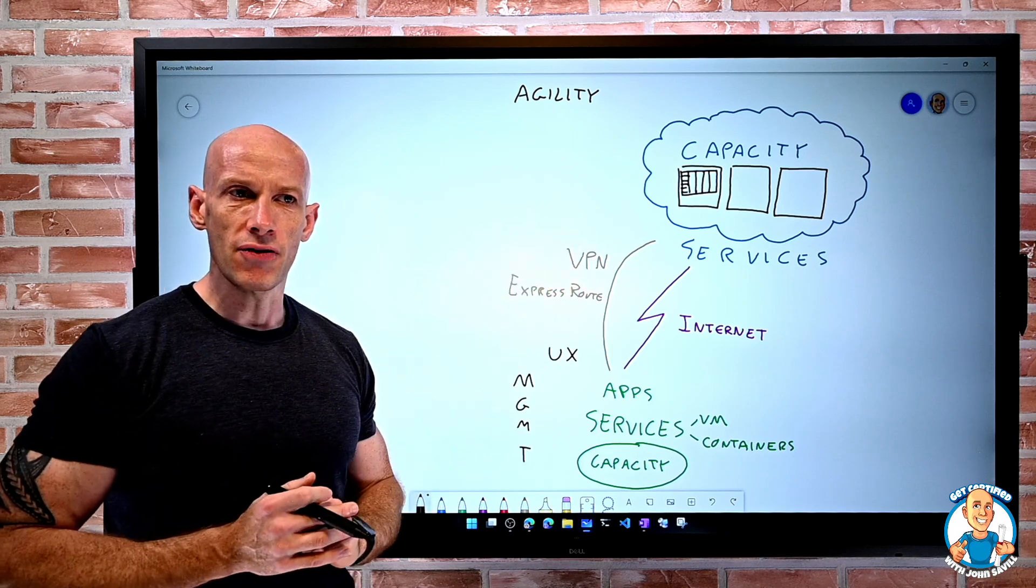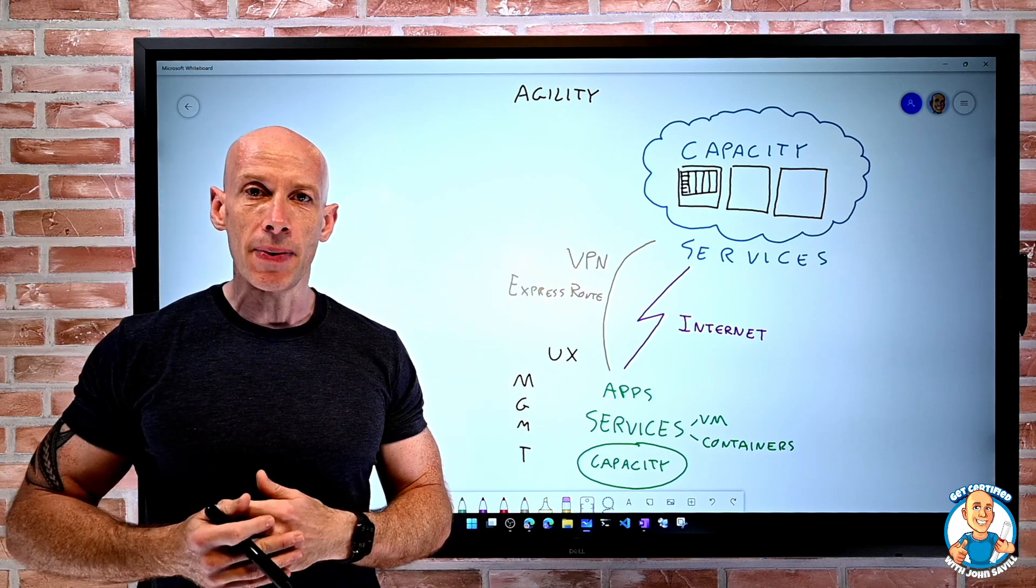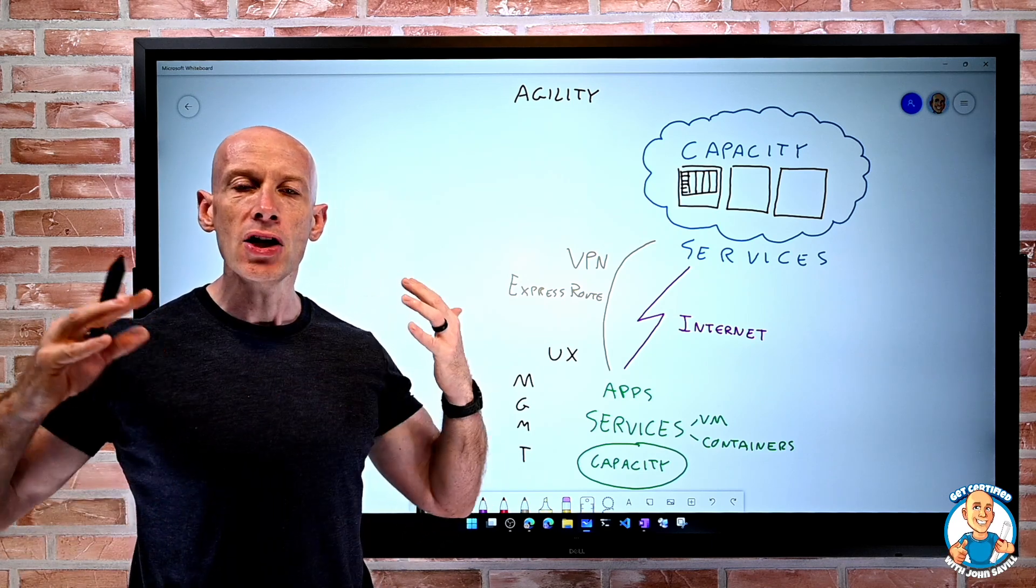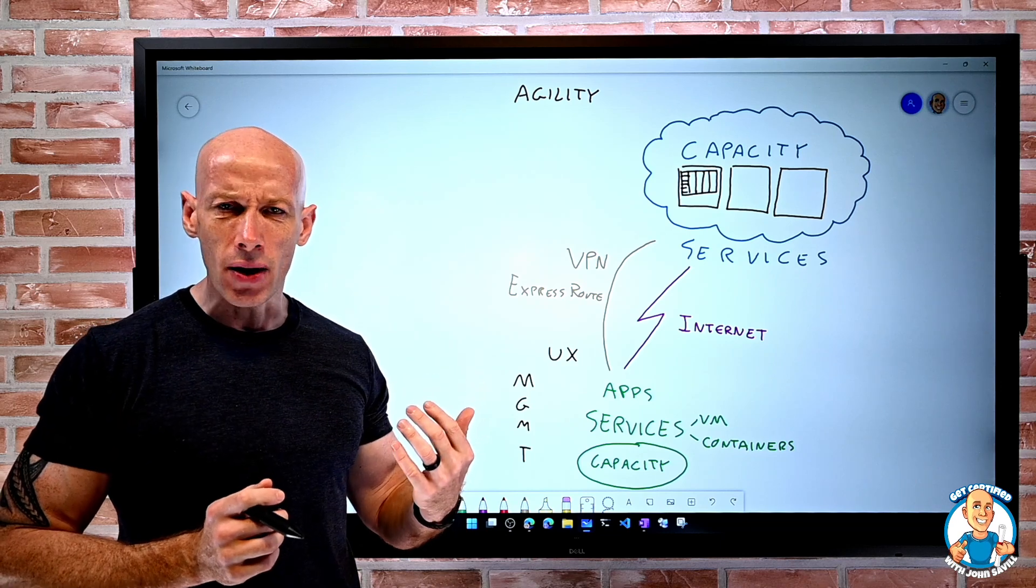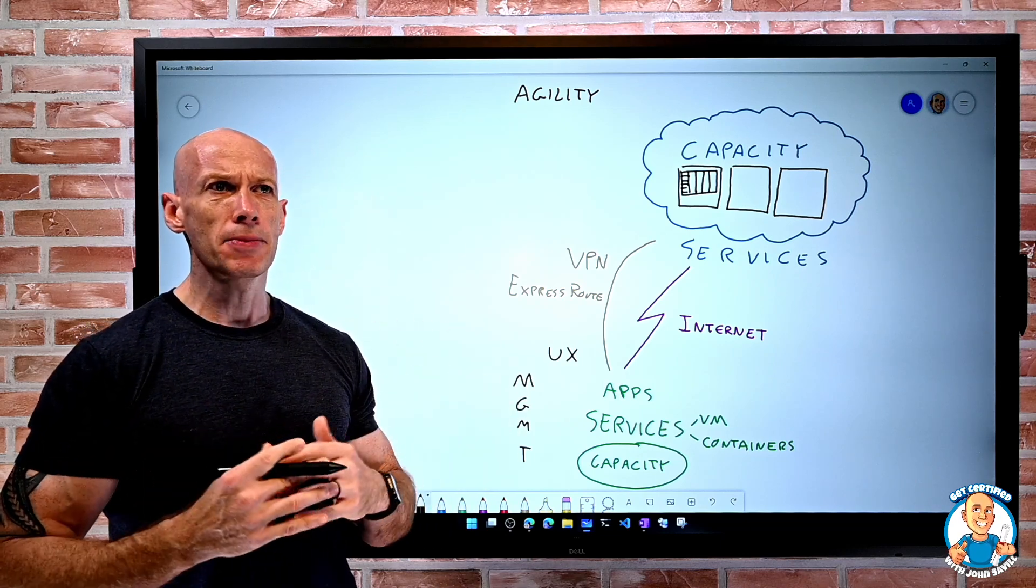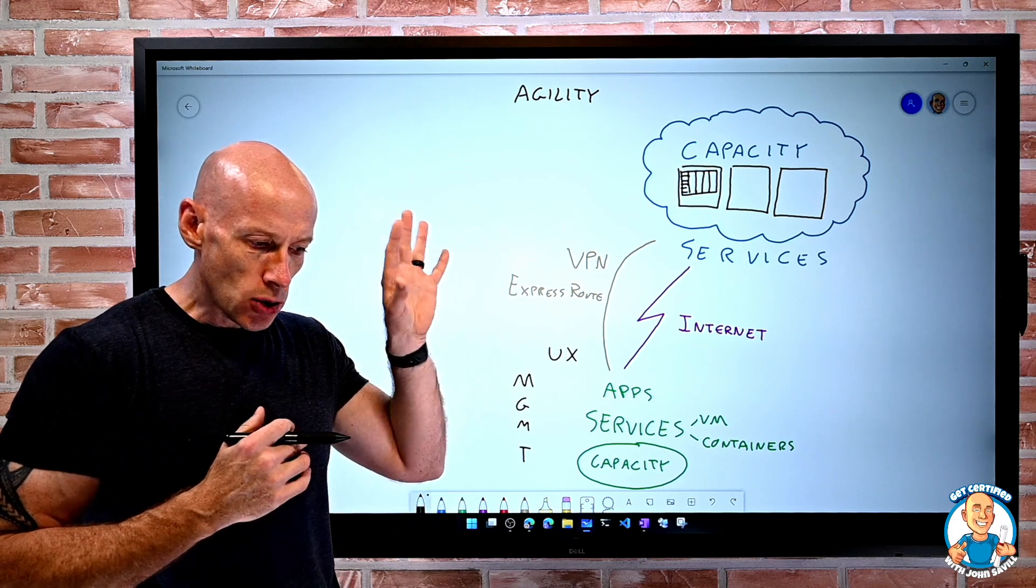If I change my architecture, I can create a new type of resource. Maybe I was running virtual machines and I want to move to containers. I can do that. Now I want to move to an app service. I was running a database in a VM. Now I want to run to a managed database. Click, click, click. I can do it at any time.